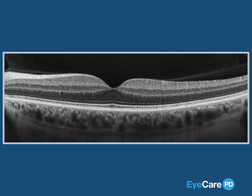The posterior cortical vitreous is the shell-like structure that encompasses the vitreous gel. Where the posterior cortical vitreous meets the retina is termed the vitreo-retinal interface.